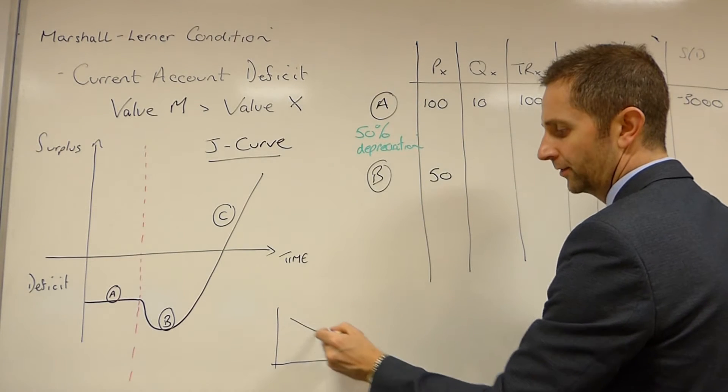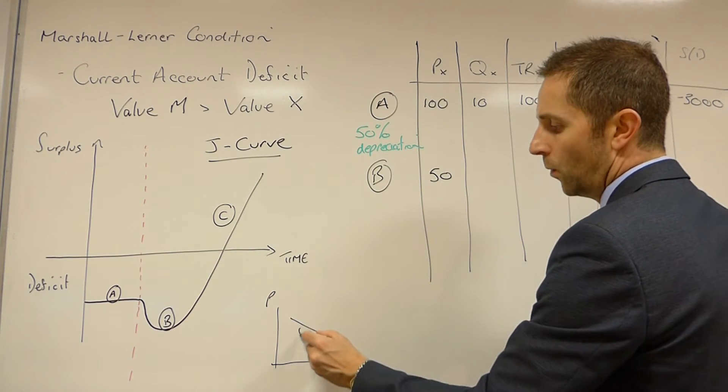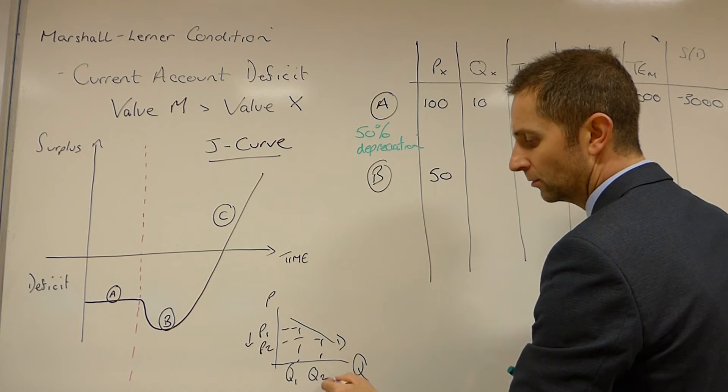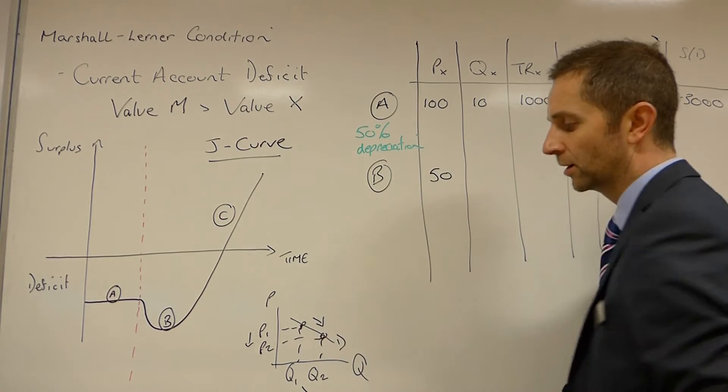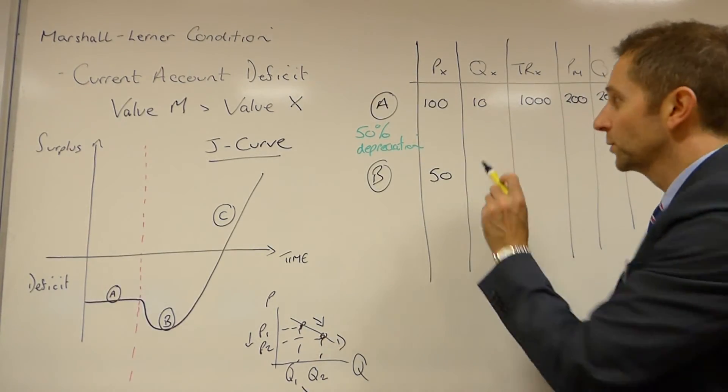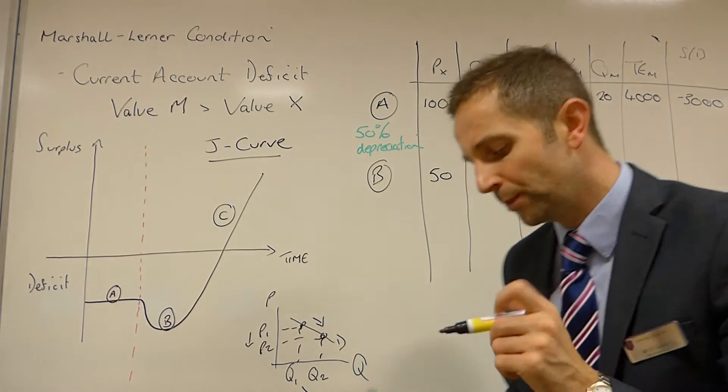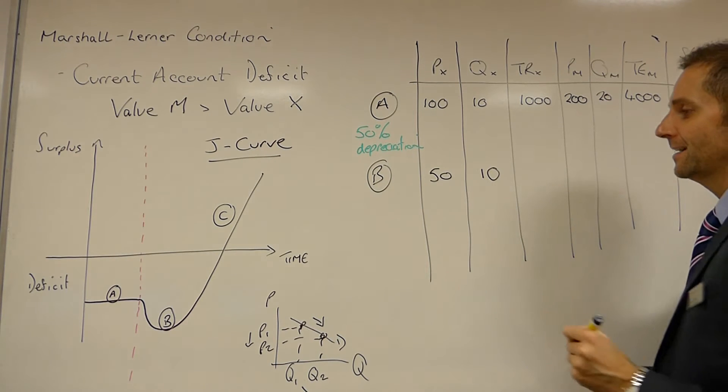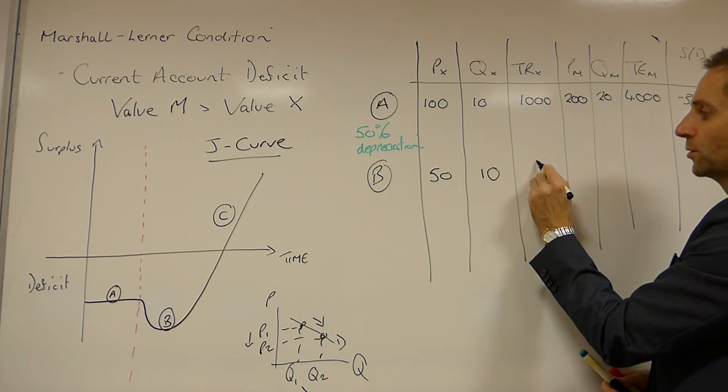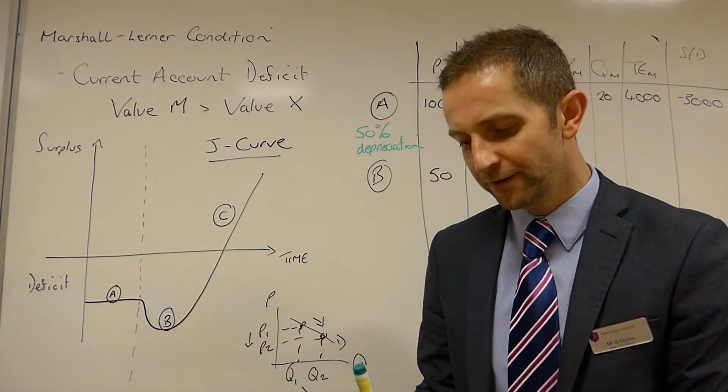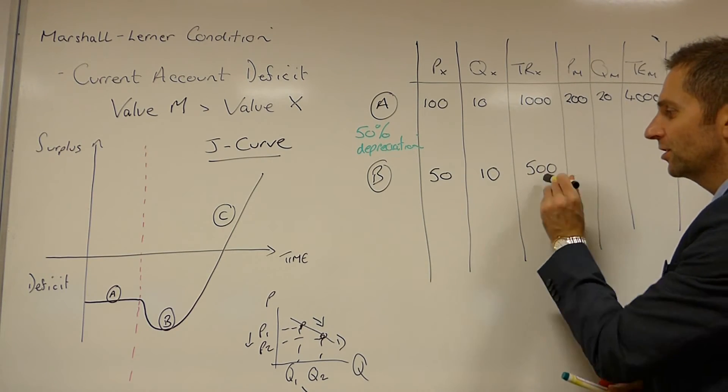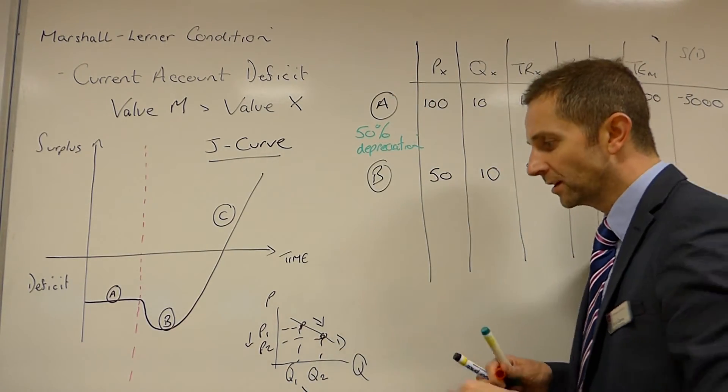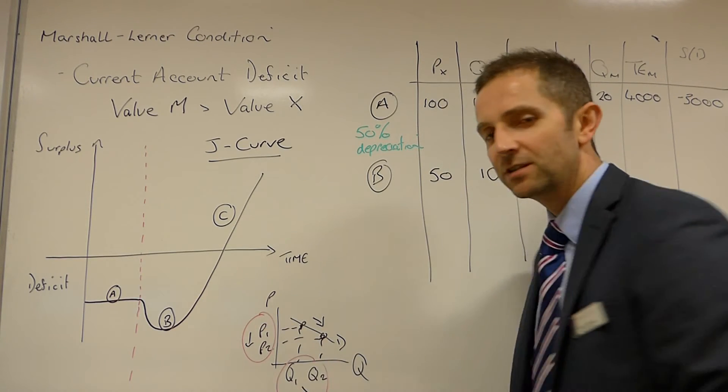Now, if you take the normal demand curve for a good, any good or service, one would anticipate that if the price of the good falls, the quantity demanded will rise. You'll get an expansion along the curve. And so you'd probably be thinking, this 10 must get bigger. But this is the crux of the problem, ladies and gents. This is it. The quantity at B does not change. It remains at 10. And so the amount of money coming into the economy has now halved. So you're trying to make things better and you've actually exacerbated the problem, because you're now getting half price for your exports. And so the problem is getting worse.